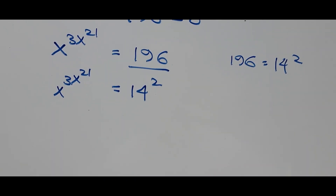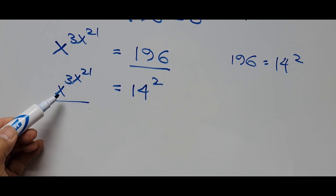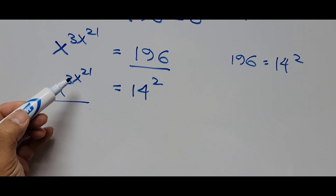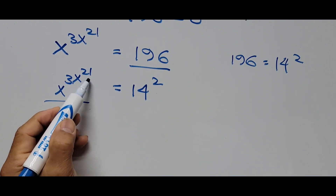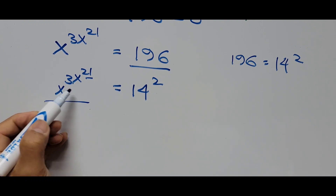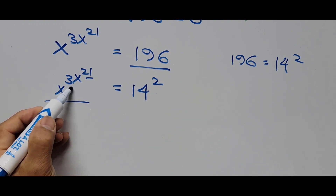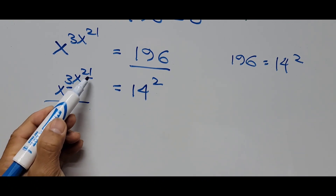In solving this kind of equation, what we have to do is find the common base and common exponent. If we focus our attention on the left side of the equation — x raised to the 3x raised to 21 — the exponent on top is 21, and the coefficient of x in the middle is 3. Our aim here is to make these the same.